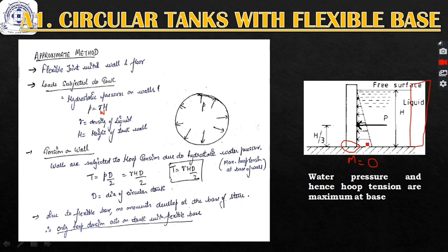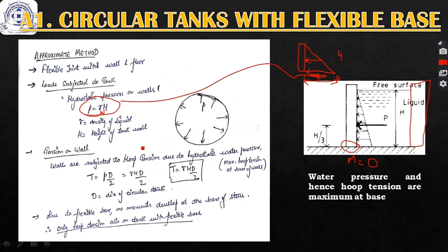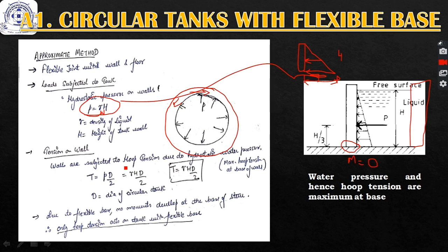The maximum pressure at the bottom will be gamma times h. Due to this water pressure acting on the circular tank wall, tension develops — the walls are subjected to direct tension or hoop tension. We use the term 'hoop tension' because the tank is circular. The formula for this tension is T = p × D/2, so the maximum hoop tension is T = gamma·h·D/2.